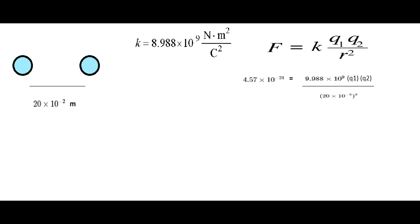I take the electric force formula and replace the given number. F is 4.57 times 10 to the negative 21 newtons between the spheres, and that's going to be equal to k multiplied by q1 multiplied by q2 divided by the distance squared.